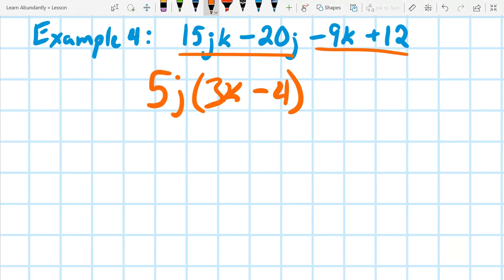When I look at the second pair, I'll notice this negative right here. And if I take out a negative 3, that would give me 3k minus 4.